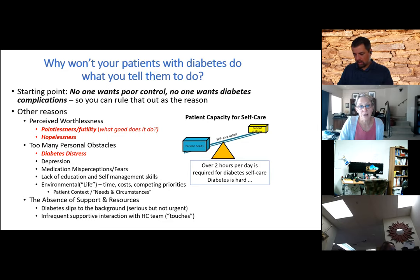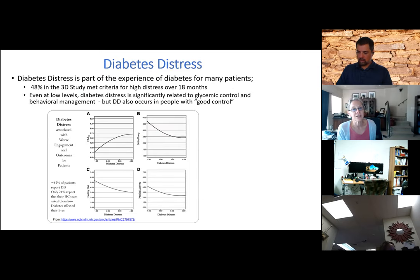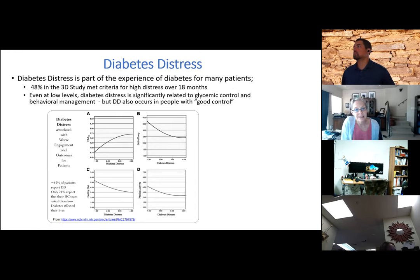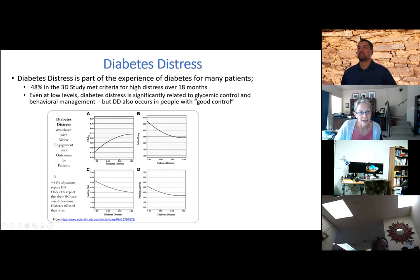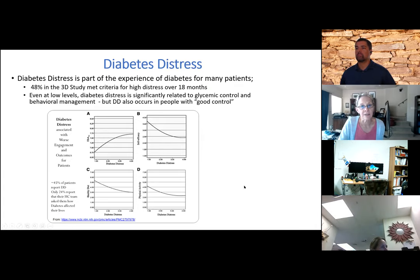Diabetes distress is very common. In one study, 48% had high diabetes distress. Even with low levels of diabetes distress — as shown on the diabetes distress scale — a little bit of distress causes the A1C to start going up, sense of self-efficacy goes down, and healthy diet and physical activity go down. People with diabetes distress report that very infrequently does anybody mention or ask them about how they're coping with diabetes.